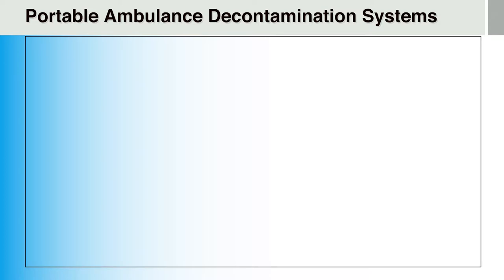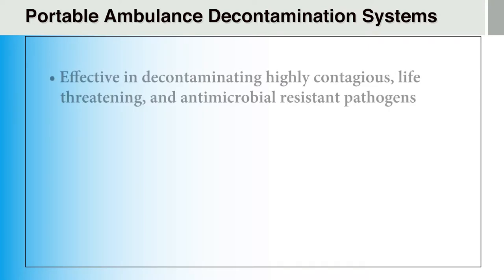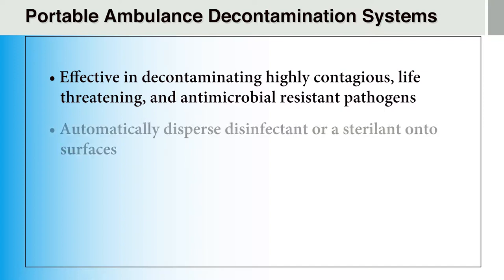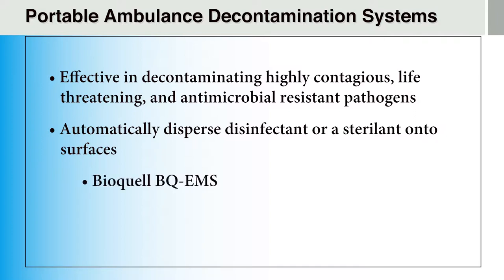Another method of ambulance decontamination is the use of a portable decontamination system. The use of these systems may be most helpful following the transport of a patient with a virus or bacteria that is highly contagious or life-threatening, as well as resistant to antimicrobial products. These systems operate by dispersing a disinfectant or sterilant inside the ambulance via vapor, fog, or mist techniques to kill microorganisms. Some of these systems can be automated and operate unattended. One example is the BioQuell BQ-EMS, which uses hydrogen peroxide vapor to eradicate pathogens from exposed surfaces. The vapor generator is placed in a sealed vehicle and a wireless control panel is used to start and stop the decontamination cycle. The interior of the ambulance must be prepared first before activating the system to ensure all exposed surfaces are decontaminated.